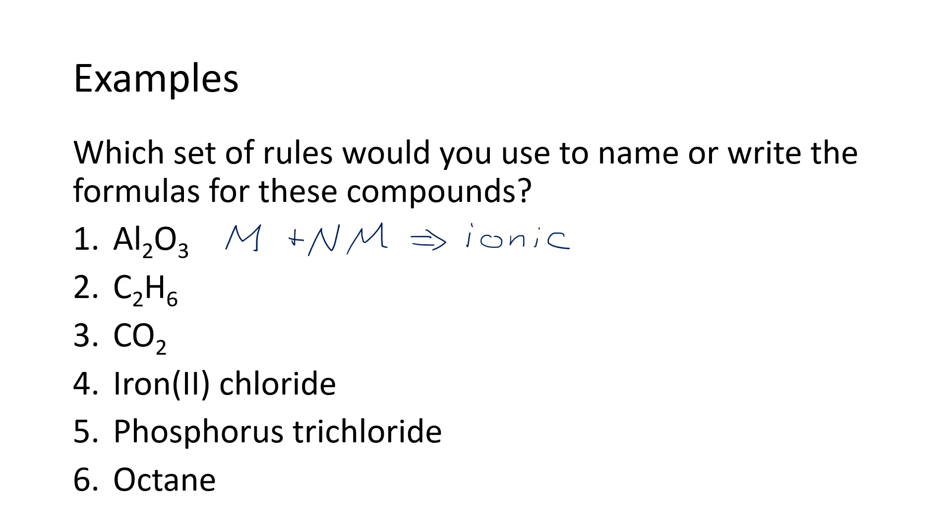All right, hopefully you've worked all of these. In the second example, we've got carbon and hydrogen. When you look at the first question on that flowchart, it says, does the compound contain only carbon and hydrogen? So that would be true here. This is only carbon and hydrogen, and so that means that this compound is an alkane and we will use the alkane nomenclature rules.